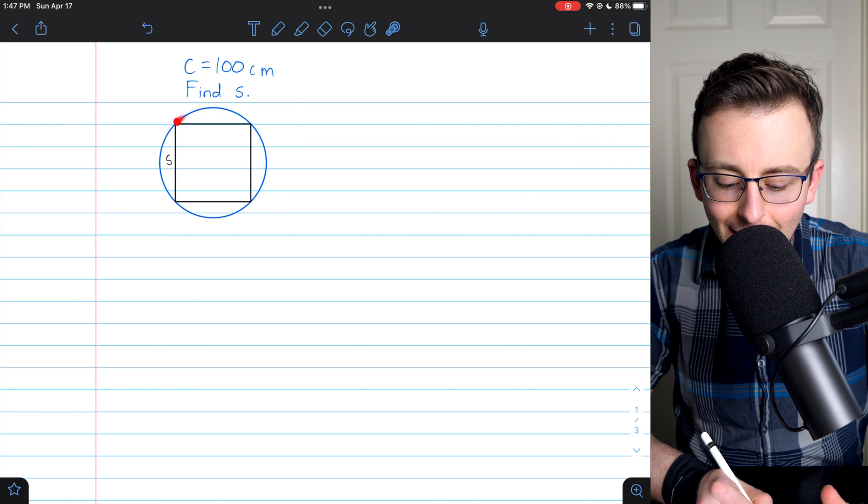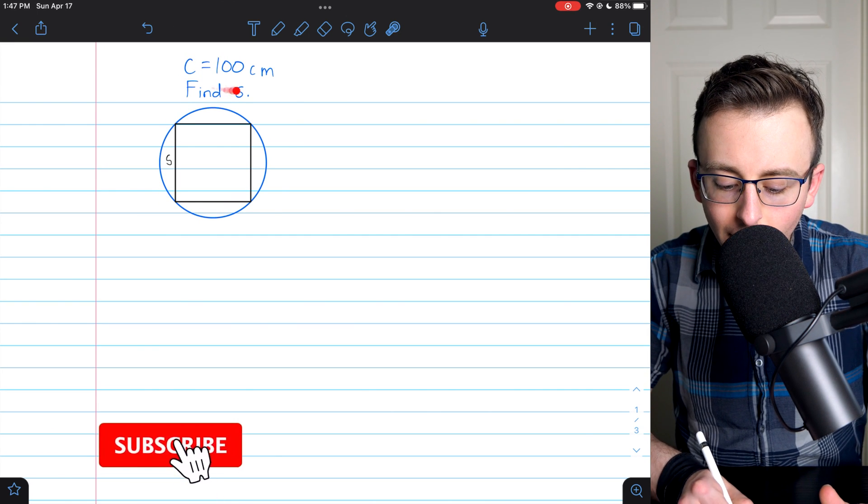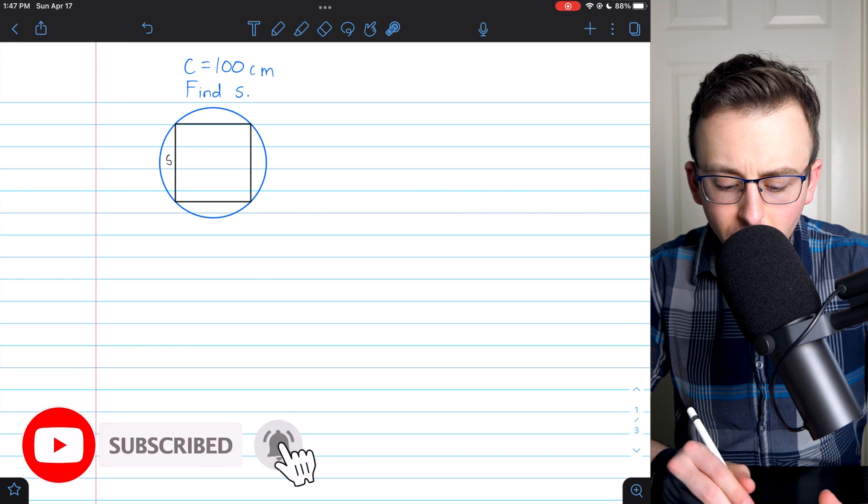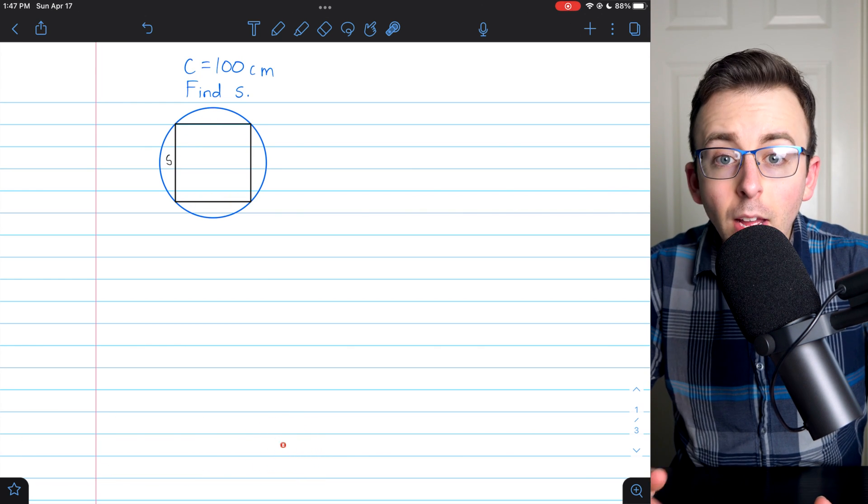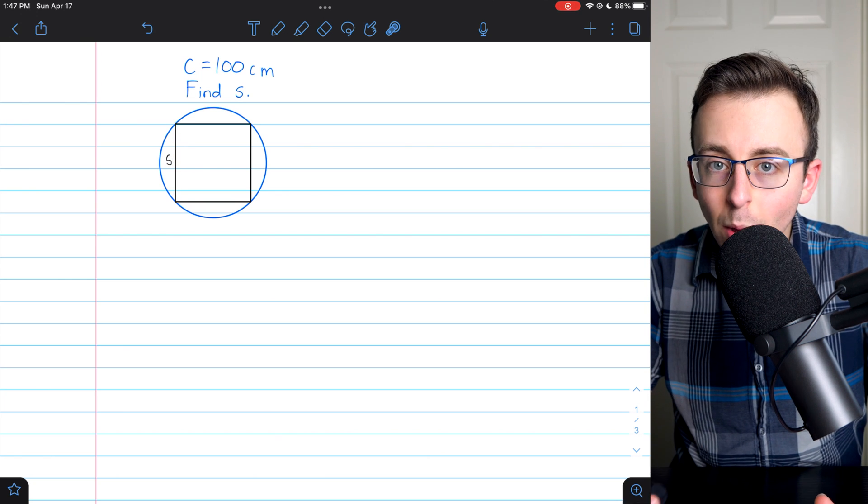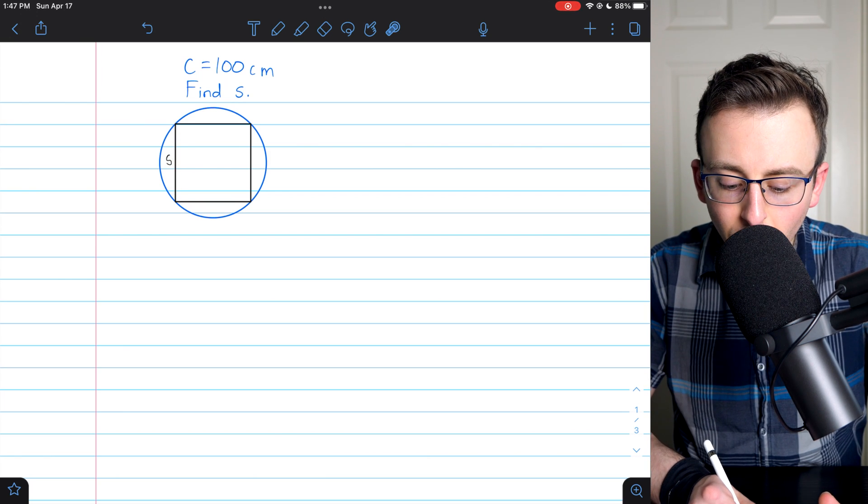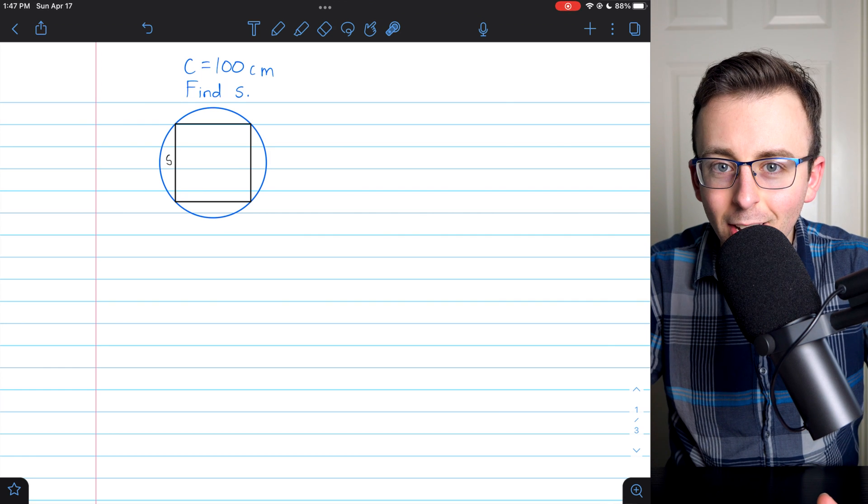Hi there. We've got a circle and its circumference is 100 centimeters. We also have this square inscribed in the circle.